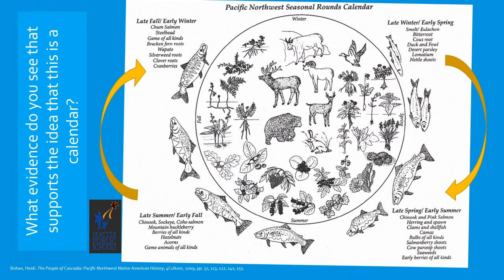We talked about that seasonal round like a calendar — remember it goes around in a clockwise fashion. The center of the circle is right here, and a seasonal round radiates out, so as it turns, these would be the species in that given time of year.